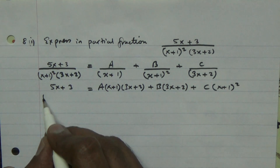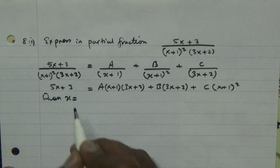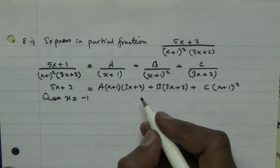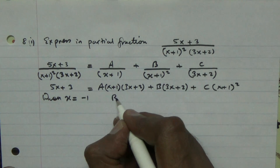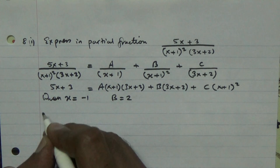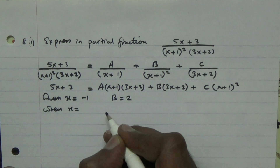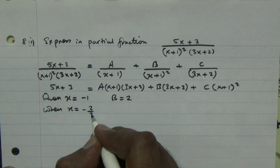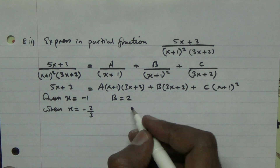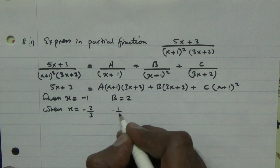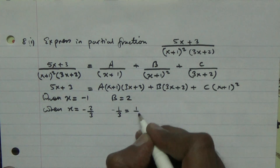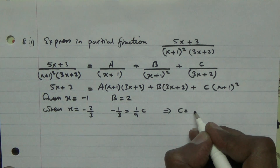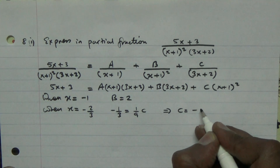From here, you can substitute values. When x equals minus 1, replacing it gives B equal to 2. When x equals minus 2 over 3 — setting 3x plus 2 equal to zero — and replacing it gives minus 1 third equals 1 over 9 times C, which means C equals minus 3.